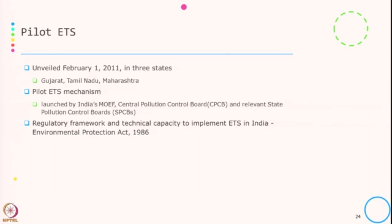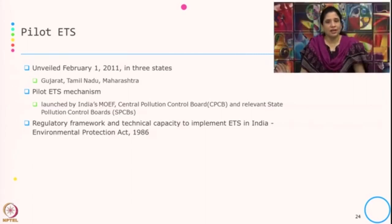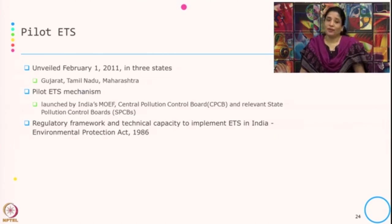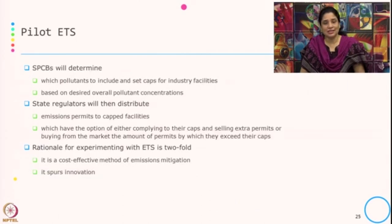The pilot Environmental Trading Scheme started on February 1st, 2011 in three states — Gujarat, Tamil Nadu and Maharashtra — by the then Environment Minister Jairam Ramesh. It was launched by India's Ministry of Environment and Forests, later which became MoEF CC when they incorporated responsibility for climate change, along with the Central Pollution Control Board and relevant State Pollution Control Boards. The regulatory framework and technical capacity to implement ETS in India is based on the Environmental Protection Act of 1986.